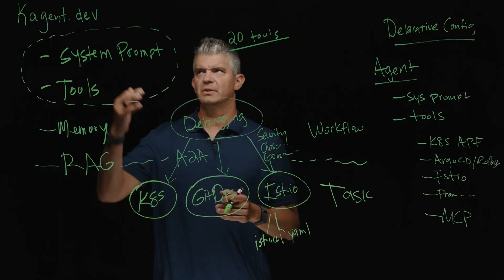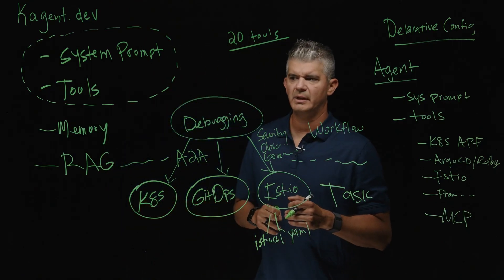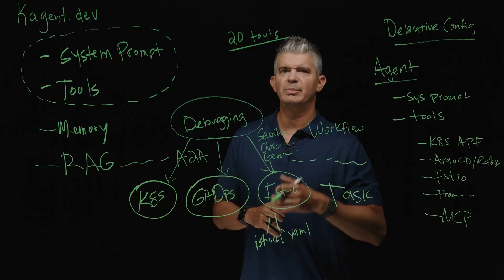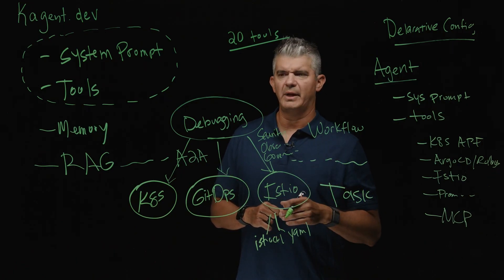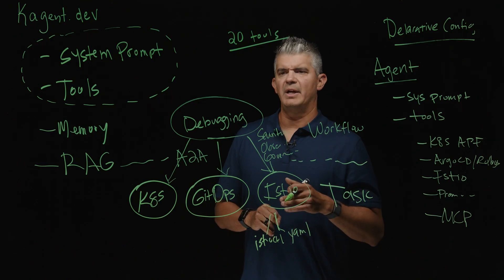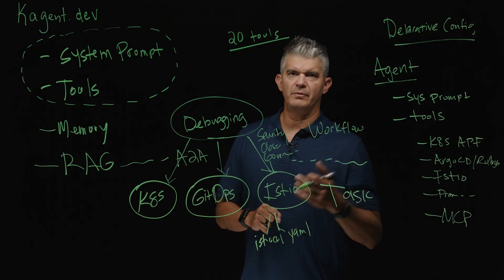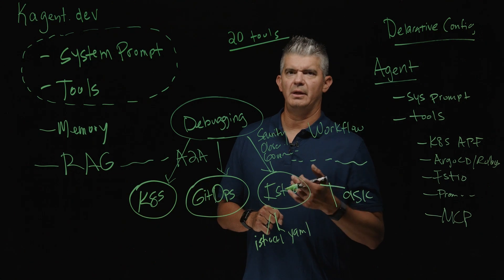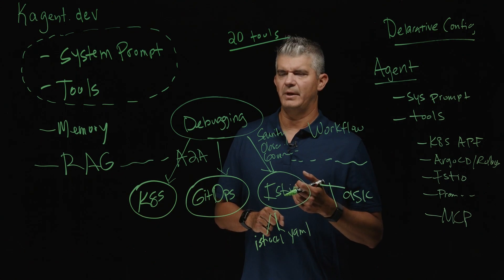So that's kagent.dev. It is a Kubernetes-friendly agent framework built on top of Autogen from Microsoft, though that's an implementation detail. It fits in very nicely with a Kube-based workflow using declarative configuration and GitOps. Go check it out and let us know how you find it.